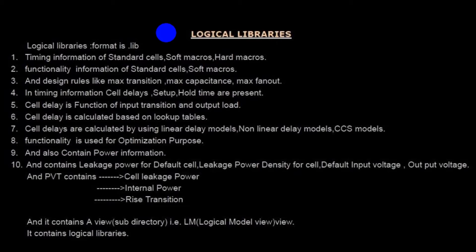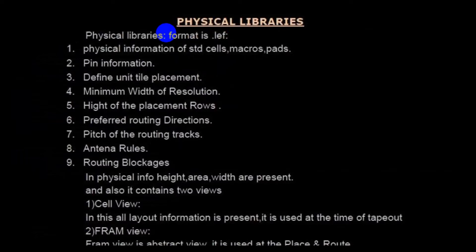The next input is physical library. The format is .lef. Physical library contains physical information of standard cells, macros, and pads, as well as pin information, definition for unit tile placement, minimum width, resolution, height of placement rows, and preferred routing directions and pitch of routing tracks.